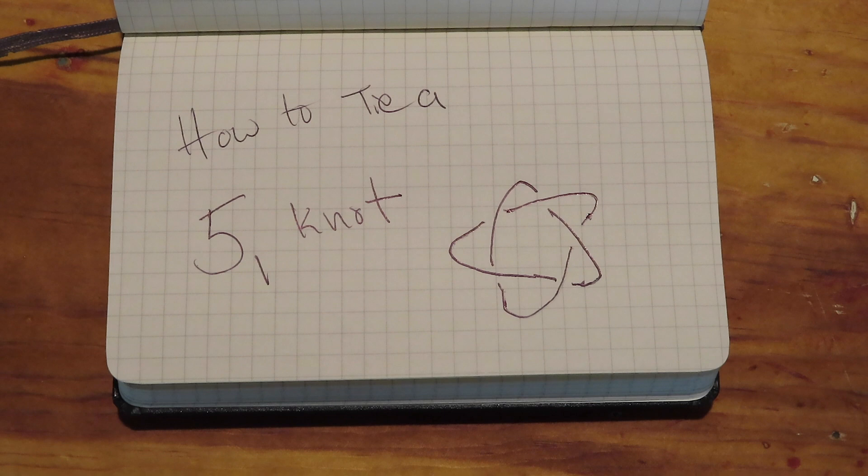Howdy! Today we're tying what mathematicians would call the 5-1 prime knot. It's a knot with 5, count em, 5 crossings.